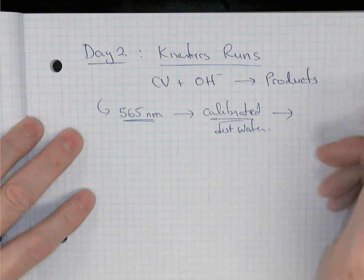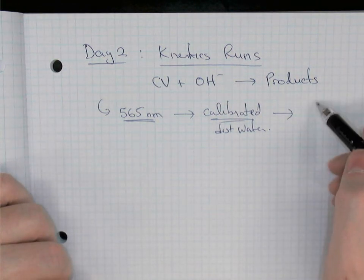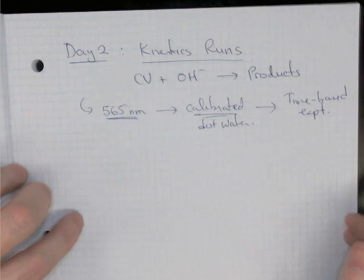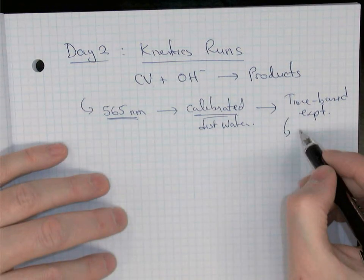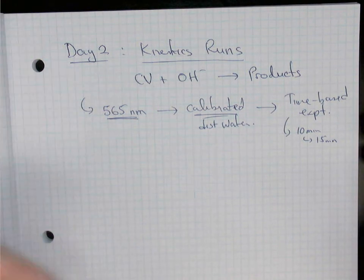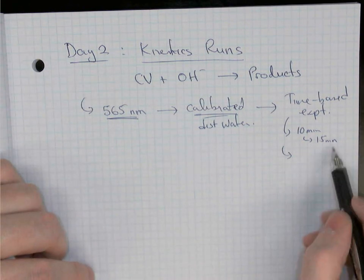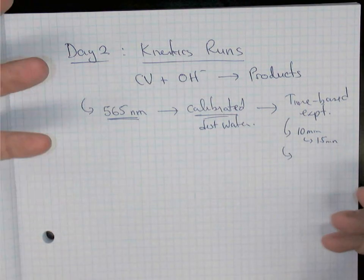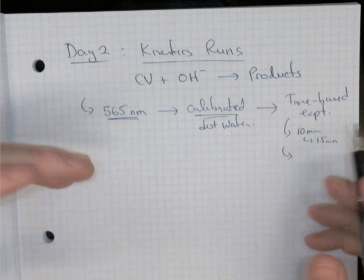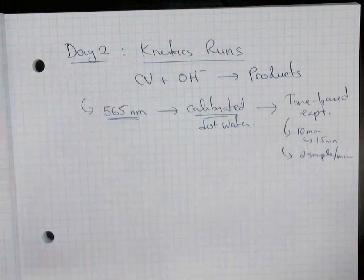On the LabQuest front screen, click the rate mode option and select a time-based experiment. Choose a duration of 10 to 15 minutes. You also set the sampling rate — you don't want thousands of data points, so probably 2 or 3 samples per minute, meaning every 20 to 30 seconds. That gives you between 20 and 30 data points over the experiment.